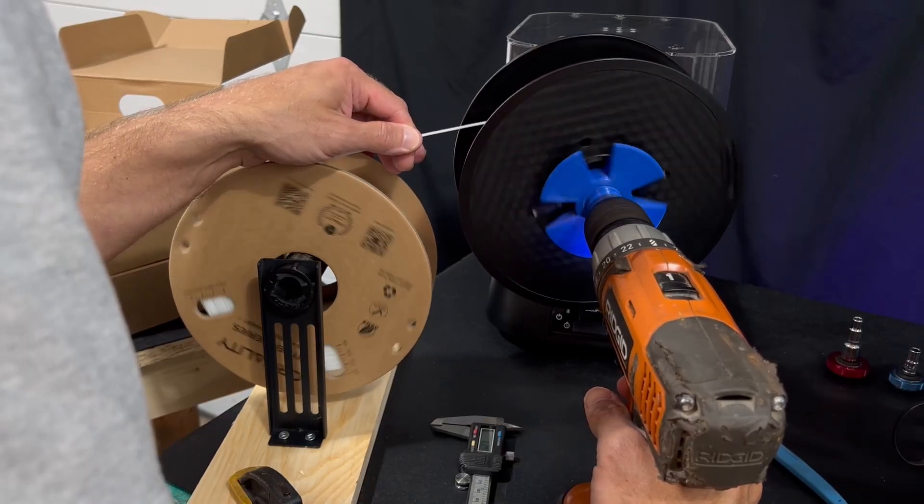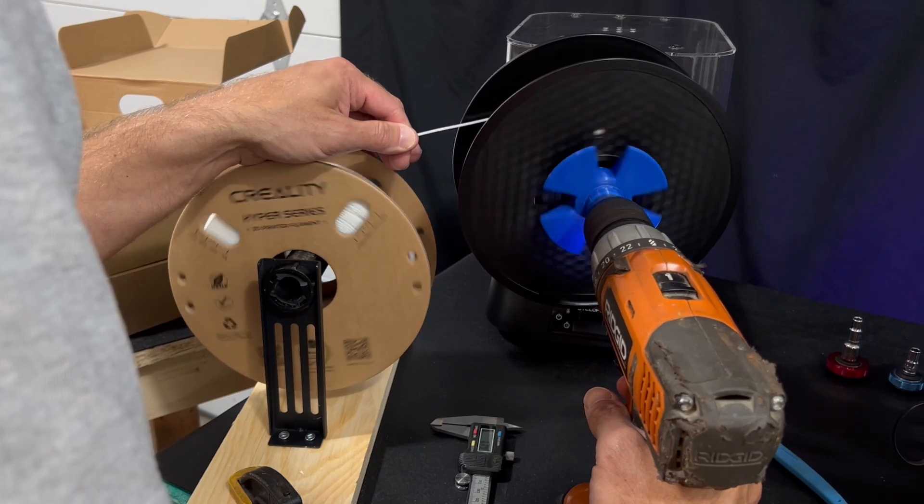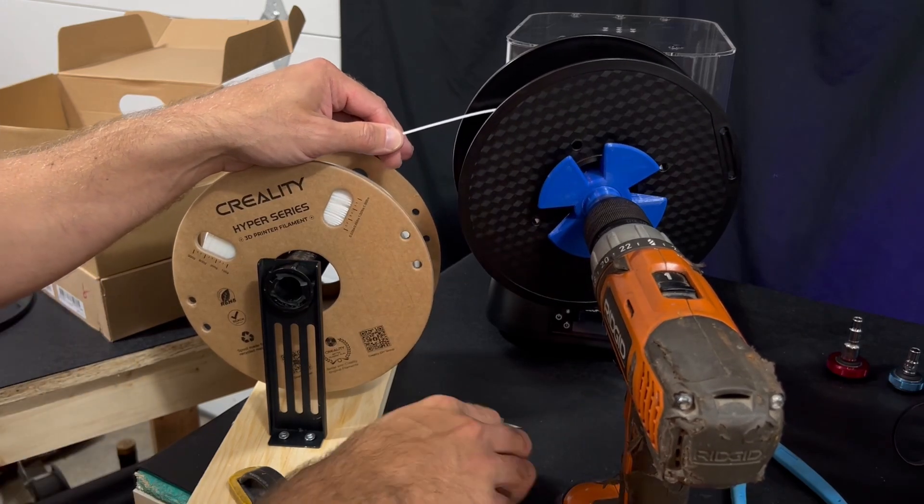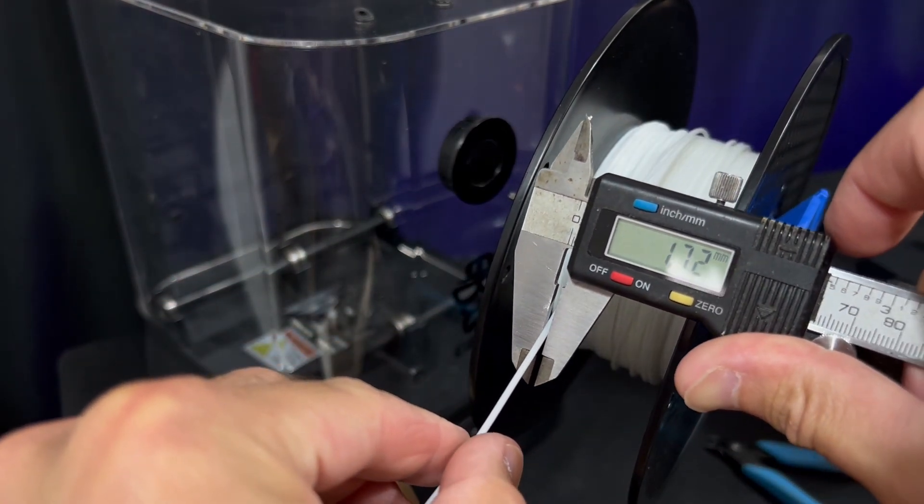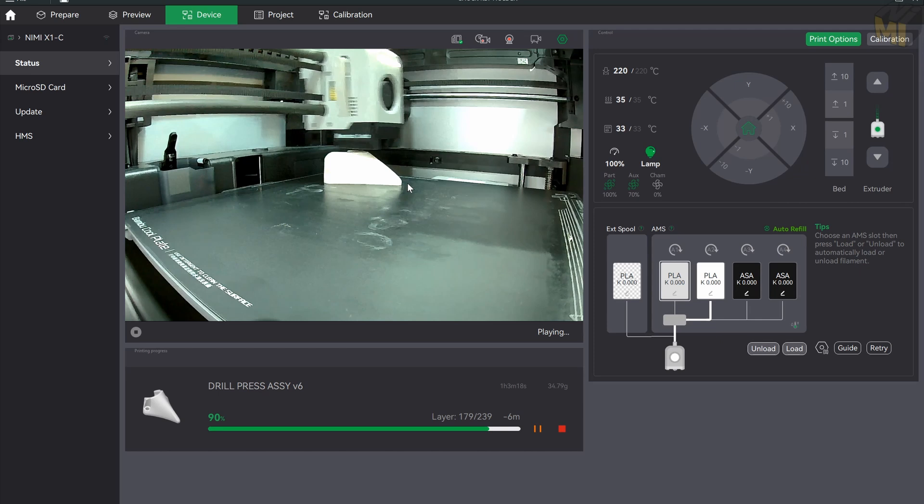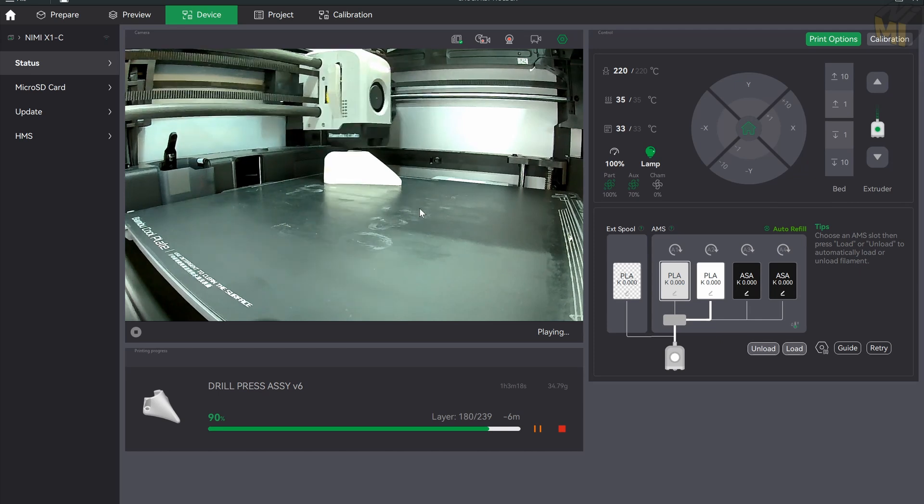For the key holder I'll print this with Creality's Hyper PLA. In a previous video I tested some spools of filament and this one had an incredibly small amount of variation in diameter, helping to give a super smooth print. So let's get that print going.